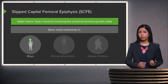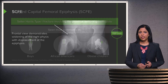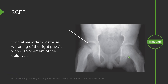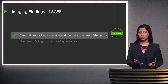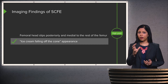SCFE is seen most commonly in boys that are African American and also commonly in obese children. The frontal view demonstrates widening of the right physis — comparing right versus left, the right is significantly wider. It also results in displacement of the epiphysis, which has been displaced medially compared to the left. This occurs when the femoral head slips posterior and medial to the rest of the femur, likened to ice cream falling off of a cone, where the epiphysis is the ice cream falling off medially.